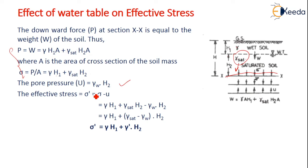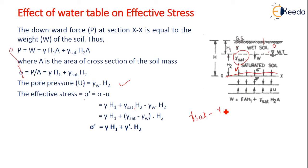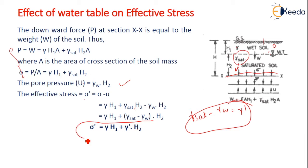The pore water pressure is calculated only where the water table exists. Above the water table it is zero; below it is gamma_w × h2. Therefore, effective stress sigma' = sigma − u = gamma·h1 + gamma_sat·h2 − gamma_w·h2. Since gamma_sat − gamma_w = gamma' (submerged unit weight), this simplifies to sigma' = gamma·h1 + gamma'·h2.